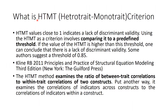Here is one more term: HTMT — Heterotrait-Monotrait criterion. An HTMT value close to 1 indicates a lack of discriminant validity, so it should be lesser than 1. Using the HTMT as a criterion involves comparing it to a predefined threshold. If the HTMT value is higher than this threshold, one can conclude that there is a lack of discriminant validity.